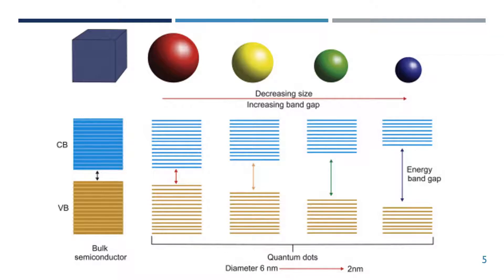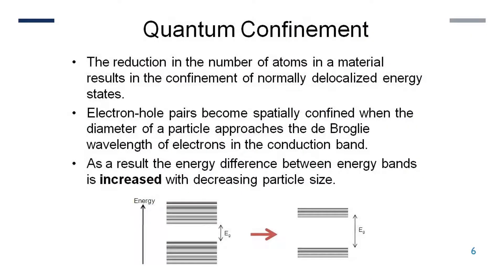The second major thing that happens when particle size is very small is that the energy band gap increases between the conduction band and valence band. For this to happen, the particle size needs to be less than 10 nanometers, and as the band gap increases, non-metallic behavior starts dominating. Third, particles at this small size behave as superparamagnetic, having more distorted electric and magnetic dipoles than in bulk material. The increase in band gap is due to quantum confinement — the reduction in the number of atoms confines normally delocalized energy states, and the electron-hole pair becomes spatially confined when the particle diameter approaches the de Broglie wavelength.